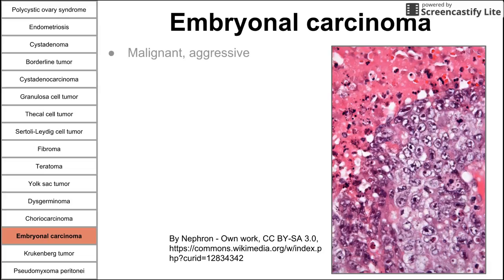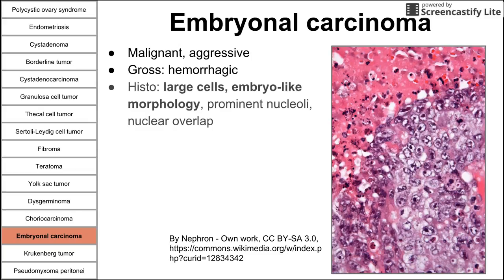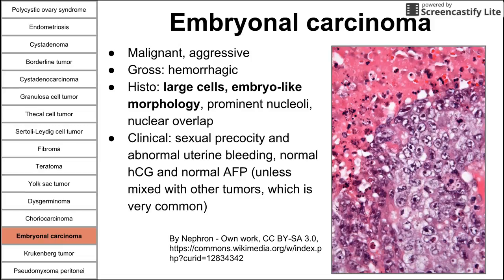Next is the embryonal tumor — malignant and aggressive cancers. Grossly they are hemorrhagic. On histology, you see large cells with embryo-like morphology, prominent nucleoli, and crowded overlapping nuclei. Clinically, you see sexual precocity and abnormal uterine bleeding. A pure embryonal carcinoma has normal HCG and normal AFP levels. Importantly, these often present as a mixture with other germ cell tumors, so if another germ cell component is causing high HCG or AFP, you'll see those elevated markers.